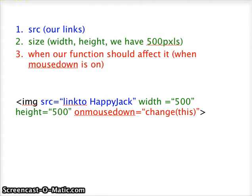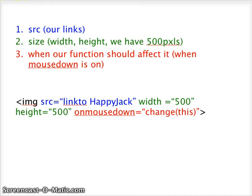The source is the links to our images. Two, the size in pixels — in our case we chose to do 500 by 500. And three, when our function should affect the image. In our case, when mouse down is on, which is another way of saying when the mouse button is clicked.